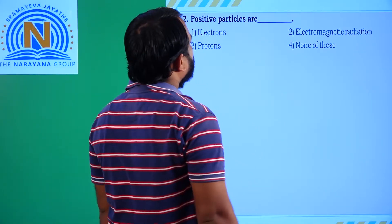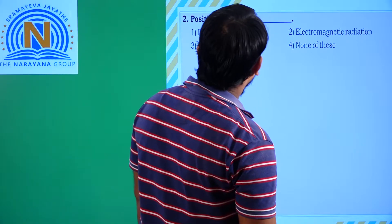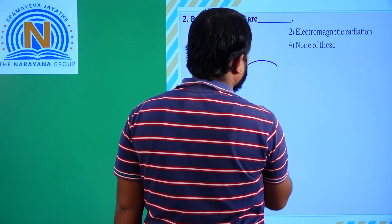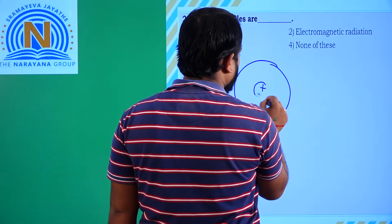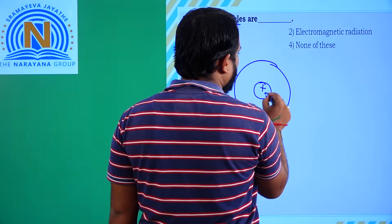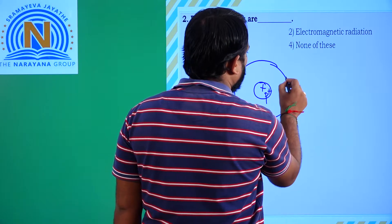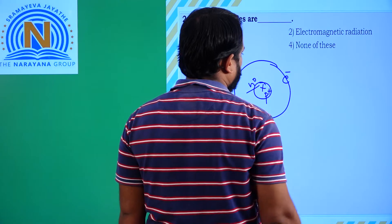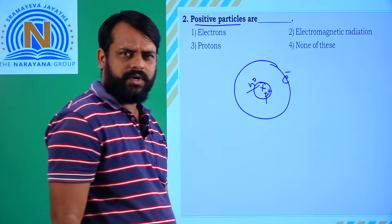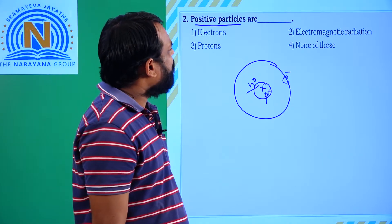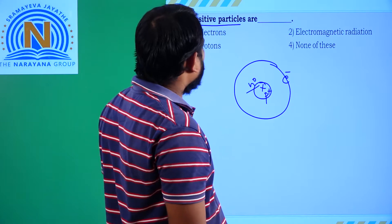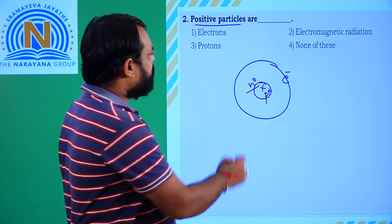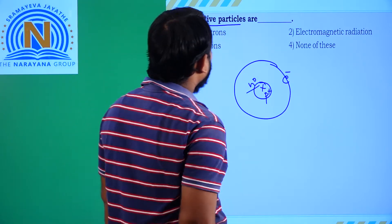The positive particles are called? Generally, the positive particles which reside in the nucleus are called protons. Electrons are revolving around the nucleus, and the neutron has no charge — it is a neutral particle. So the positive particles are called protons. The third option is correct.